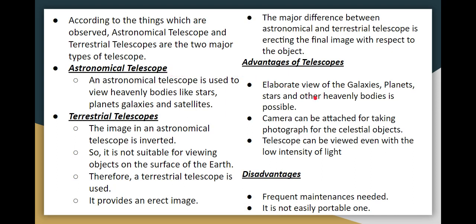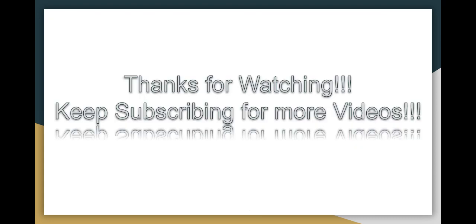The advantages of a telescope include the ability to see heavenly bodies, providing a clearer and more elaborate view of galaxies, planets, and stars. A camera can be attached to capture celestial objects. Telescopes can gather light even under low-light conditions. Disadvantages include maintenance requirements and portability issues. In this chapter, we will next see the textbook back questions and answers. If you like this video, please share and subscribe. Thanks for watching.